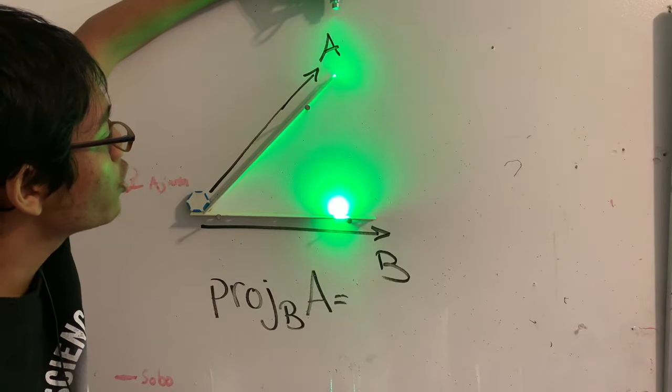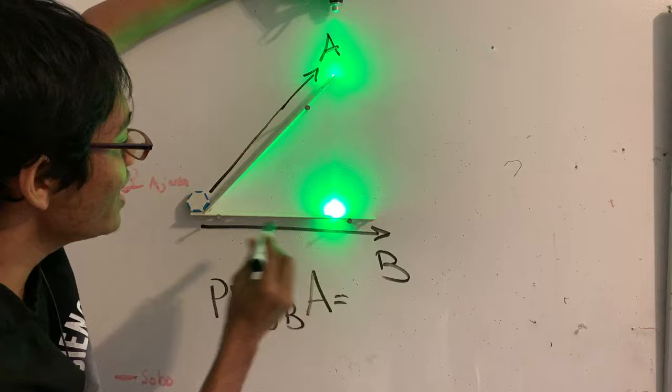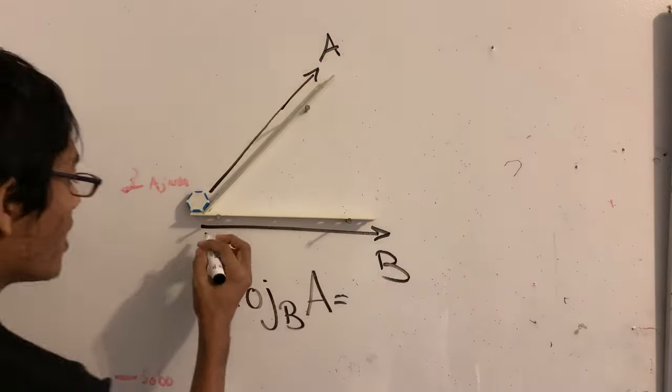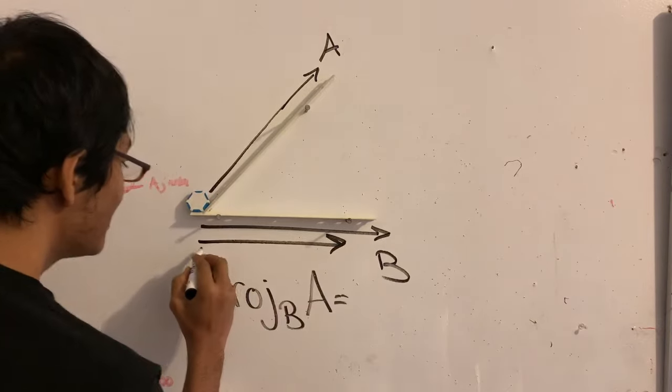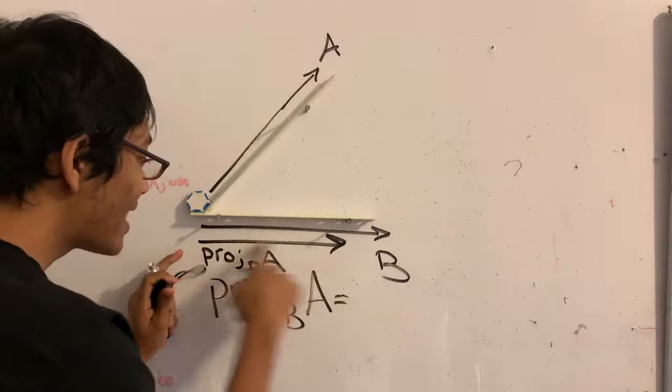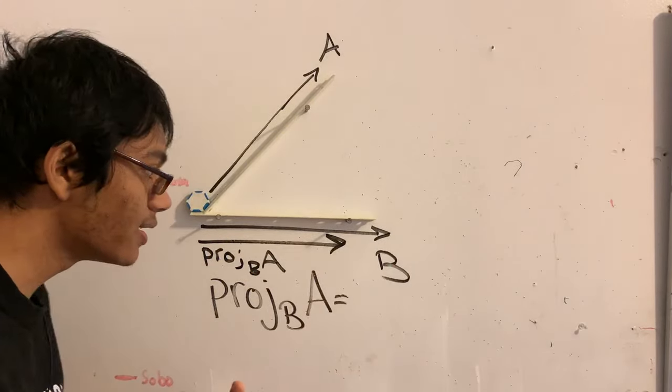Now, look at that closely and you'll realize something of major importance. This projection itself is a vector. That projection itself was a vector. This was the projection we were looking for, Proj B A. And just like any vector, this projection has a magnitude and a direction. But how do we find that magnitude and direction? That's what we're going to do.